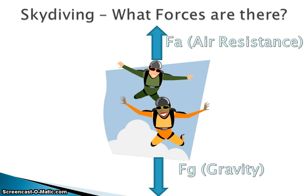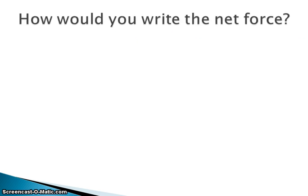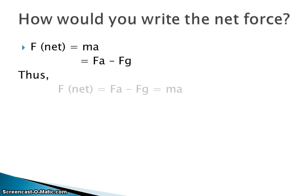However, your air resistance changes depending upon your speed, so as you start out your speed is initially going to be smaller. So how do you write the net force for this? Your net force is equal to mass times acceleration. Here we have the force due to air resistance minus the force due to gravity — thus your net force equals air resistance minus gravity, which equals mass times acceleration.